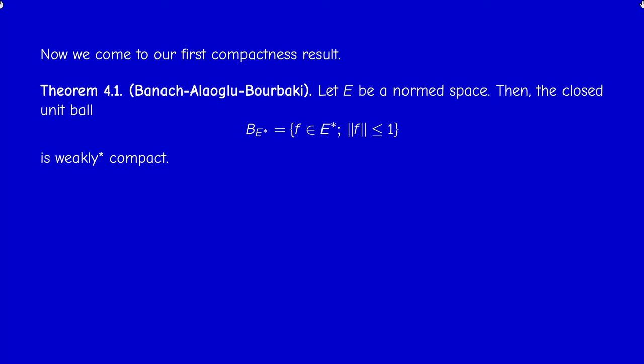Welcome back. This is the second video of section 4.3, in which we are going to prove our first compactness result known as Banach-Alaoglu. It's very simple to state: the closed unit ball of the dual space is weakly star compact, or compact for the weak star topology.